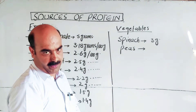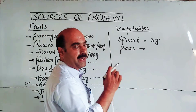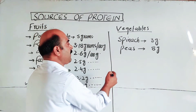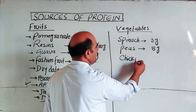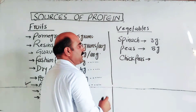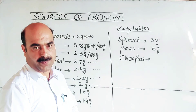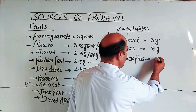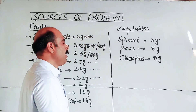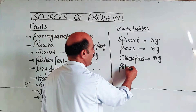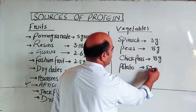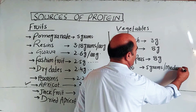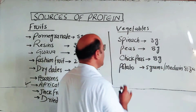Chickpeas are a ground protein source with high protein content. Chickpeas are a good source of protein. Potato - a medium-sized potato contains approximately 5 grams of protein.